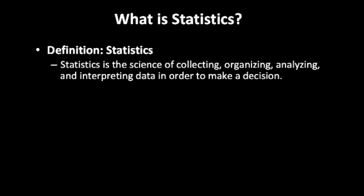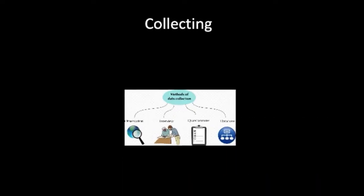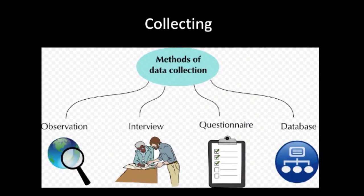First of all, we should collect the data. How do we collect data? There are many ways to collect data. Collecting data can be as simple as observing something and writing down how it looks or acts. For example, a scientist looking at a chemical reaction in an experiment. Data can also be collected by asking several people the same questions, or by writing questions with a choice of answers to gather information from respondents.